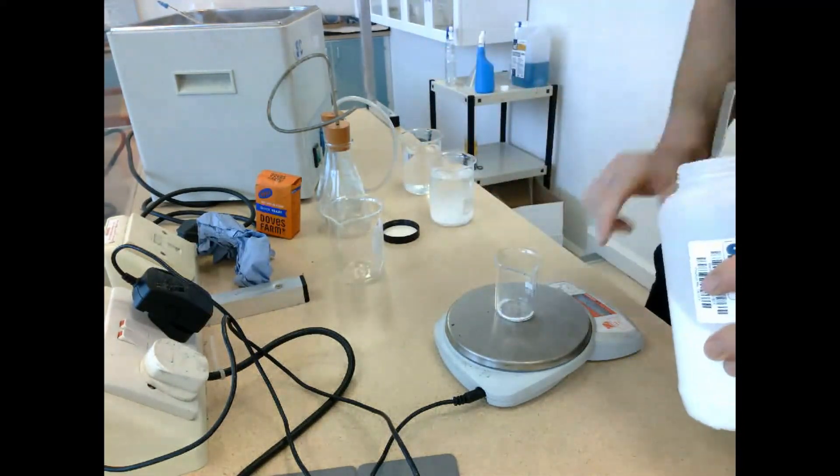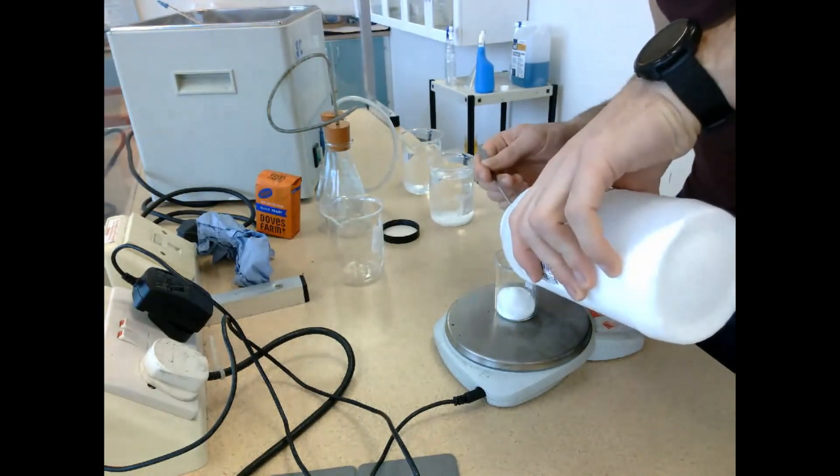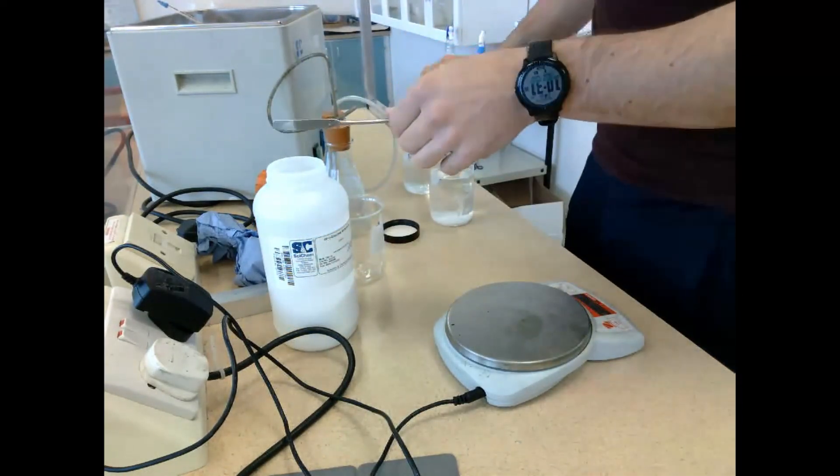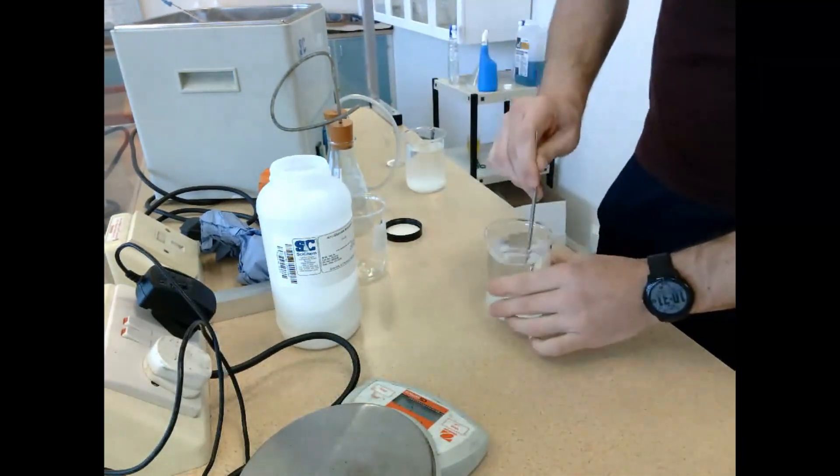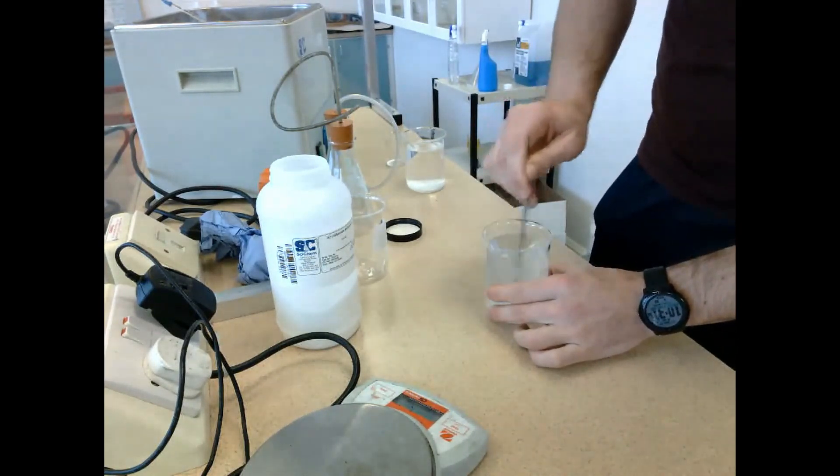We are then able to get to the next step, which is measuring out the glucose. We're going to weigh out about five grams worth of glucose and we're going to add it to the first beaker.